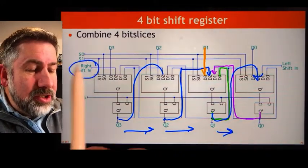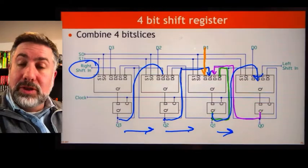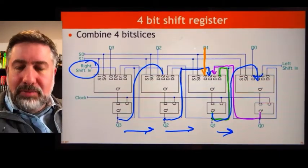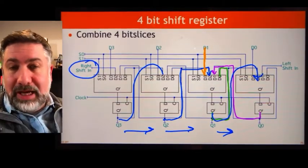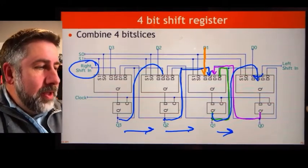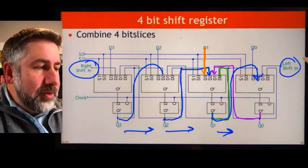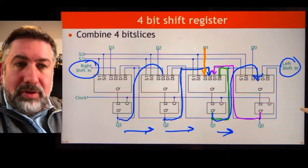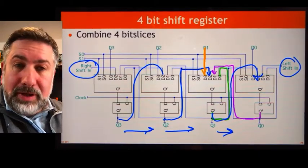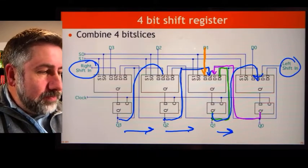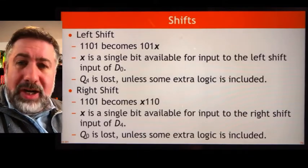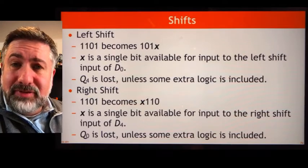When we shift to the right, we must decide what to do with the top bit since there's no value to shift in. We bring in an input from the outside world — usually we shift a zero in because it's simpler. The same applies shifting left: we need a value at the lower bit to shift in.